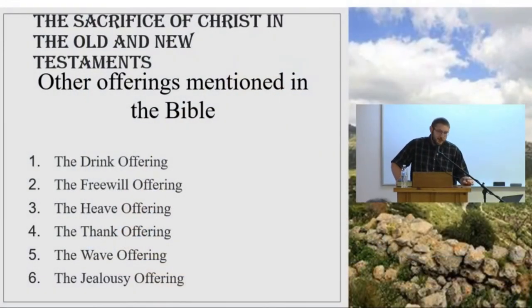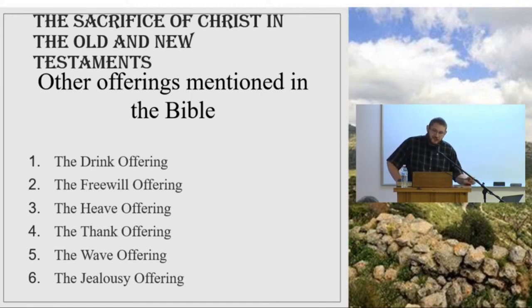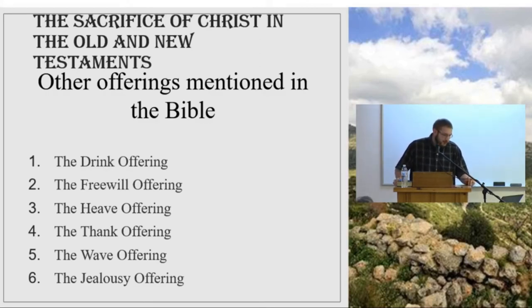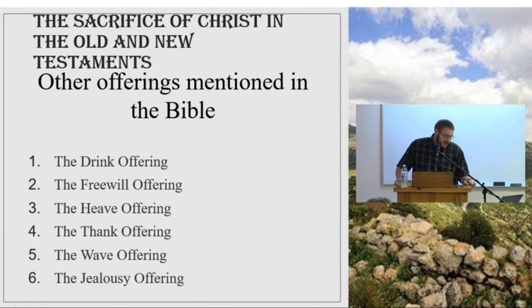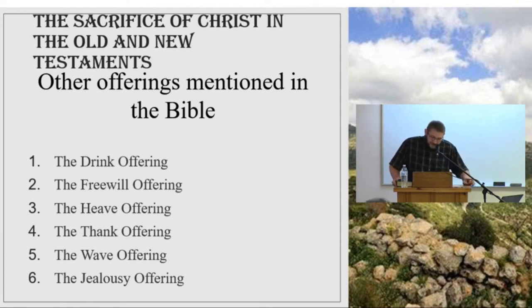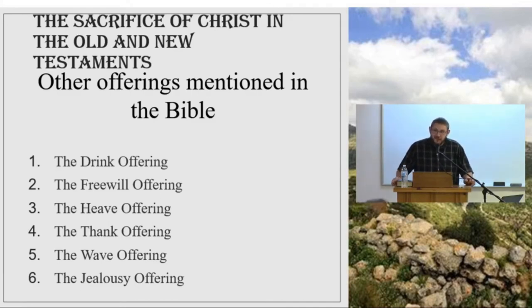The jealousy offering is a little different than the rest. You can read about it in Numbers chapter 5, verses 14 through 31. This offering was for a man who thought his wife had been unfaithful. He was to bring this offering before the priest. It was similar to the meat offering — a tenth part of an ephah of barley meal, with no oil or frankincense. An ephah is equal to about a bushel, roughly 9.3 gallons or 35 liters, so a tenth part would be just under a gallon or three and a half liters of barley meal.